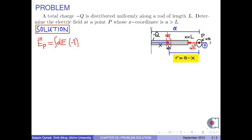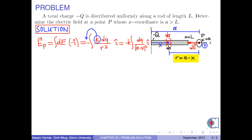dE is calculated by the formula k times dq over r squared. Here, because k is constant, it can be taken outside the integral sign. So we are left with negative k times the integral of dq over (a minus x) squared, î-hat.